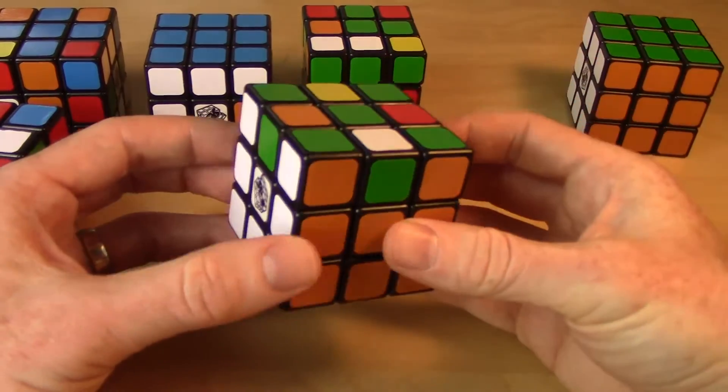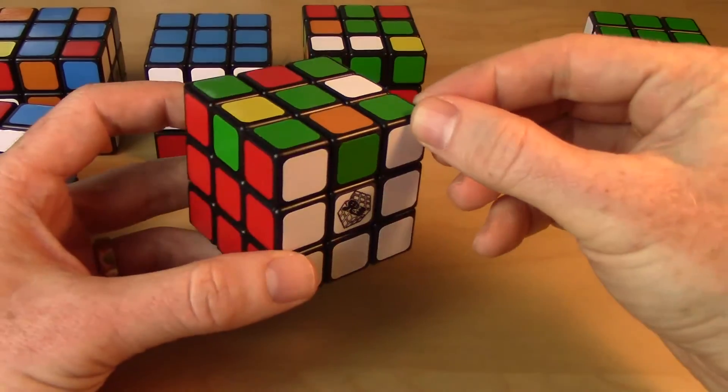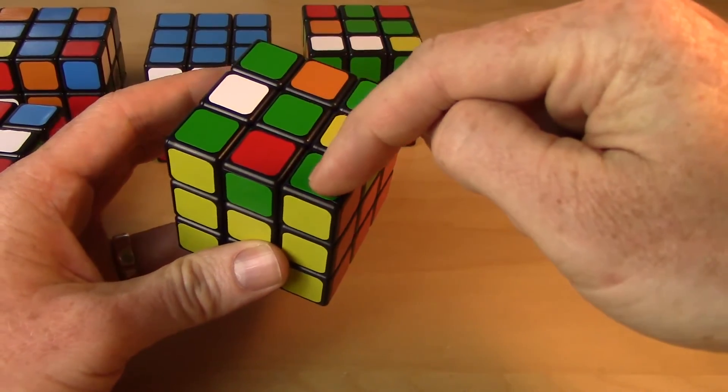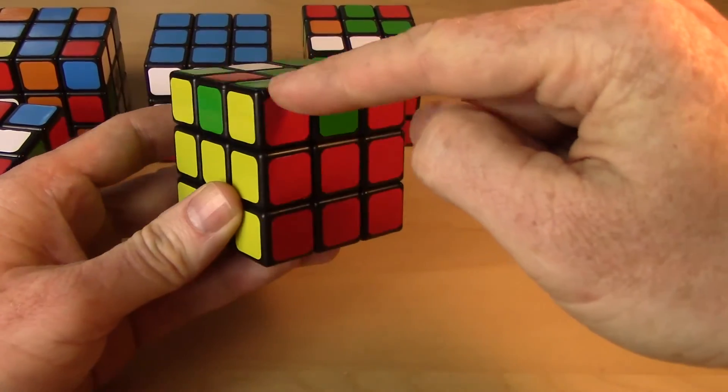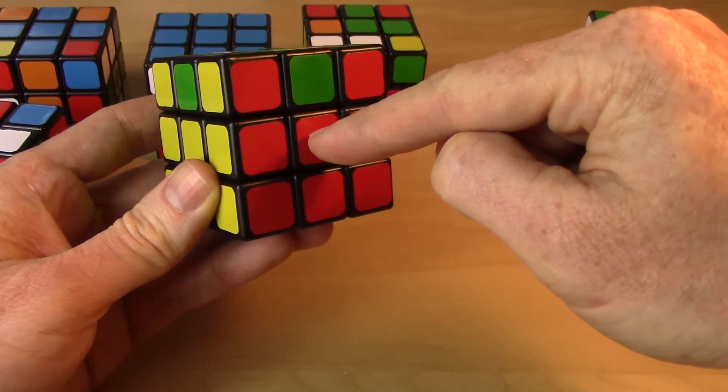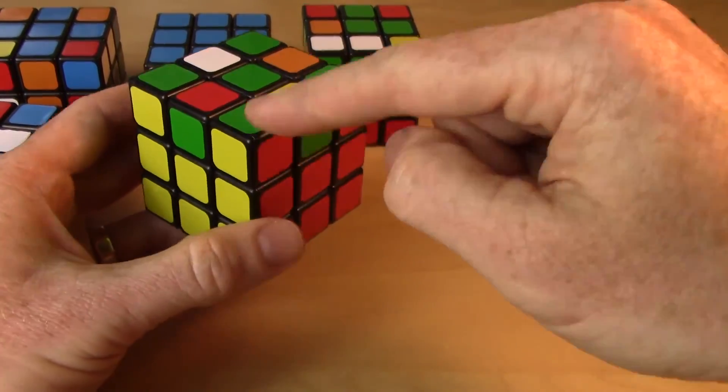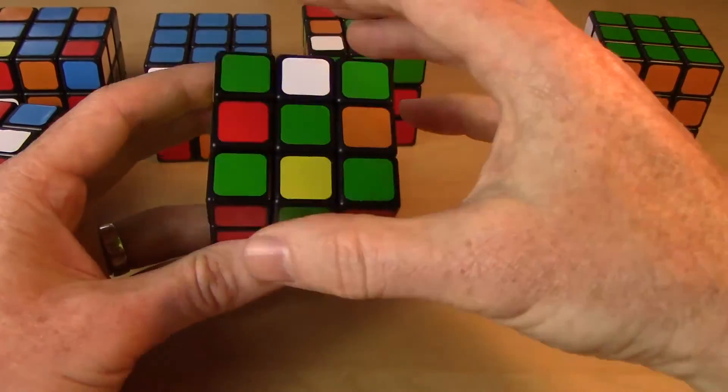Step four would be to solve the corners. So you can see the corners now are all solved. How do we know they're solved? Well, we look - green matches green, red matches the center color red, yellow matches yellow. So that corner piece is in the right spot. All four corners are done.